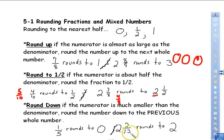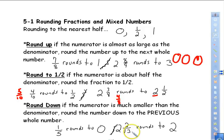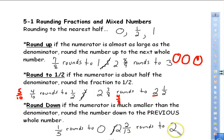One way to check is to find the halfway point of the denominator. Half of thirteen is 6.5, and two is much closer to zero than to 6.5 on the number line. So 2/13 rounds to zero, which means the whole number two simply stays the same.